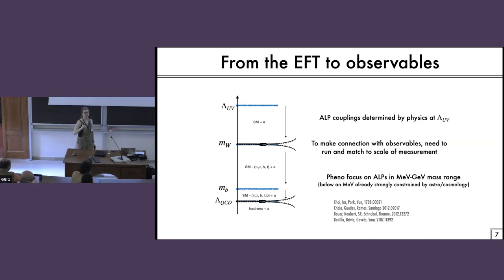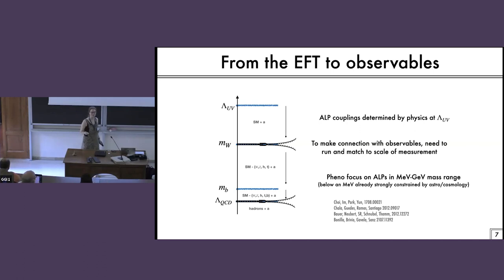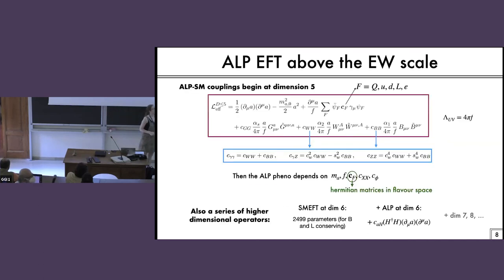When we talk about axions and ALPs, it's always suppressed by F — it's always an EFT. But we know the coefficient in front because we have a UV theory. Sure, but in any particular model you can put particular values of the Wilson coefficients. In general, the ALP–standard model couplings begin at dimension five. So here we're above the electroweak scale. The couplings to fermions involve the quark doublets, the right-handed quarks, the lepton doublet, and right-handed electrons. For the couplings to gauge bosons, we have gluons, and then the SU(2) and the U(1) gauge bosons.